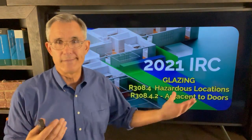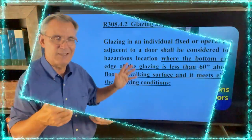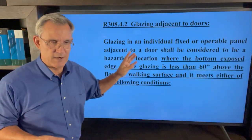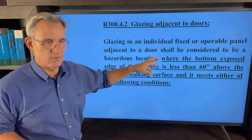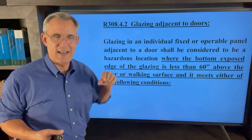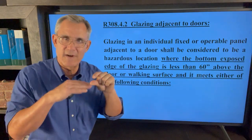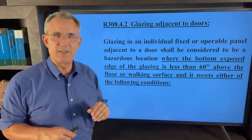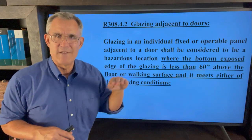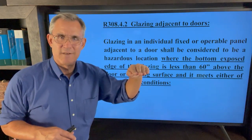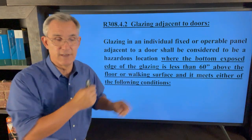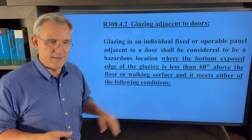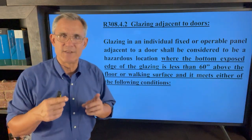It's not quite like it used to be, so let's get into it. Adjacent to doors: if you've got glass adjacent to doors, the rule applies where the bottom exposed edge of the glazing — not the frame, but the edge of the glazing — is less than 60 inches above the floor or walking surface. So if you're five feet or below with these windows, this section is going to apply to you, and it must meet either of the following conditions.